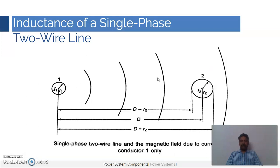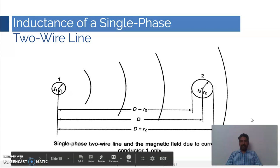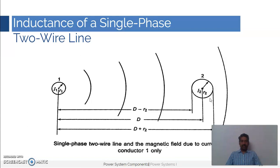The flux outside conductor one will completely link the current i1 until d minus r2, which is the outer surface of conductor two facing conductor one. So the flux existing between conductor one and this point links with the complete current i1. As you move from d minus r2 to d plus r2, it is going to link with a fraction of the current i1.